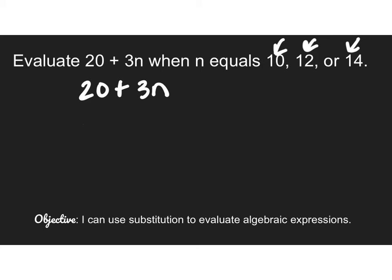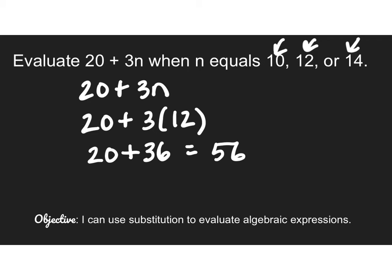In my second problem, n is equal to 12. So now I'm going to substitute 12. So instead of n, I'm going to write 12. I'm going to do my multiplication first. 3 times 10 is 30. 3 times 2 is 6. So 3 times 12 is 36. 20 plus 36 is equal to 56.